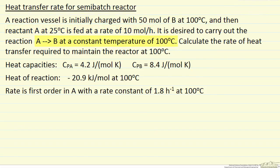The reaction is A goes to B, so we're starting out a reactor containing product B, and we want to carry out the reaction at 100 degrees C, and so the question is what's the rate of heat transfer required to maintain the reactor at 100 degrees C.